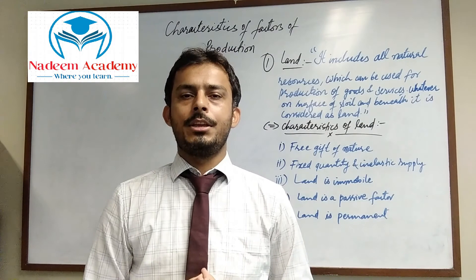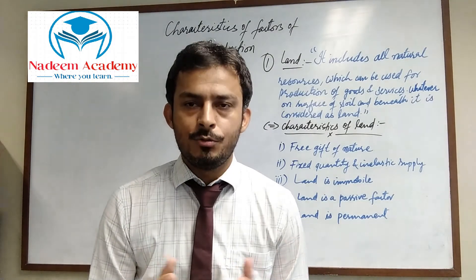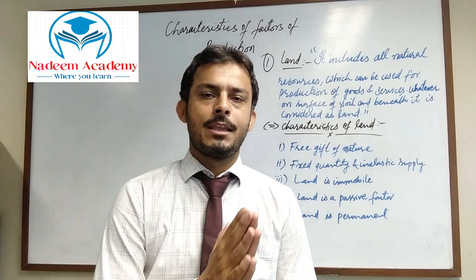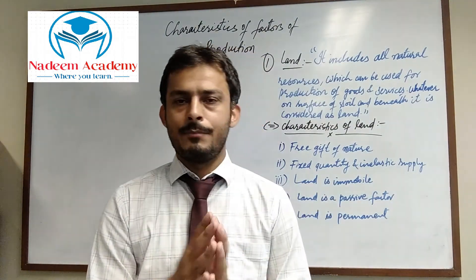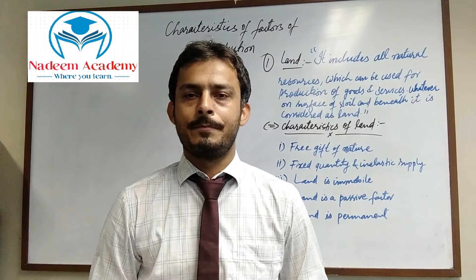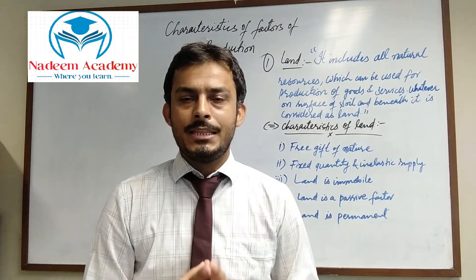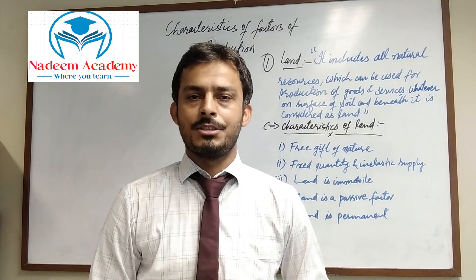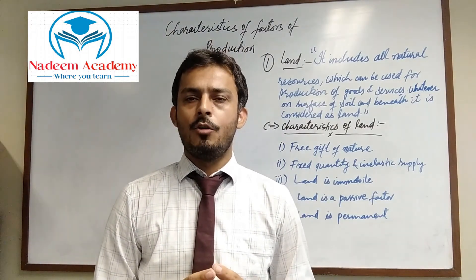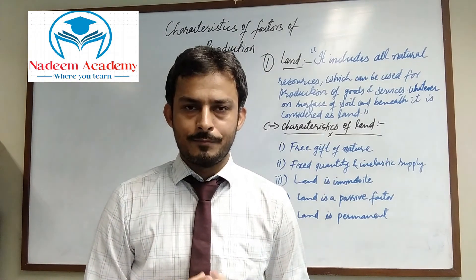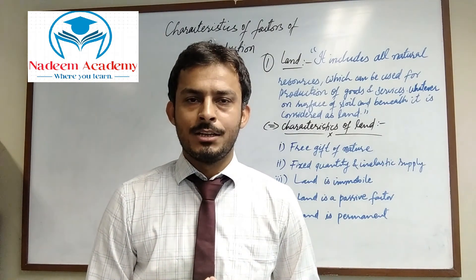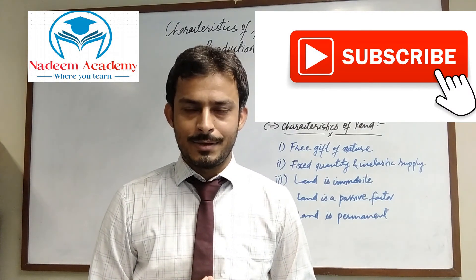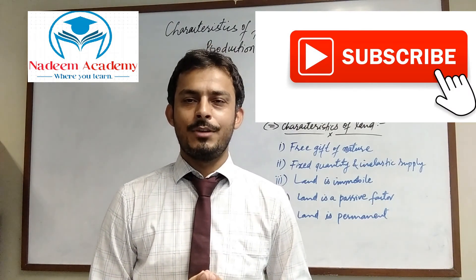The fifth characteristic is that land is permanent. We cannot destroy a piece of land or reduce its availability. Sometimes land becomes barren, but there are solutions for that. These are the characteristics of land — the first factor of production discussed today. I hope everyone understood. Please like, comment, share, subscribe to my channel, and click the bell icon for upcoming videos. Thank you very much.